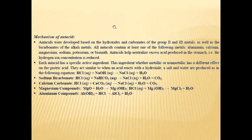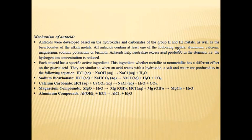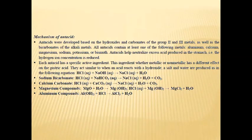Now let's discuss how antacids act — the mechanism of action of antacids. Antacids are developed based on hydroxides and carbonates of Group 2 and Group 3 metals, as well as bicarbonates of alkali metals. All antacids contain at least one of the following metals: aluminium, calcium, magnesium, sodium, potassium, or bismuth — which are Group 1, Group 2, Group 3, alkali metals, or alkaline earth metals.